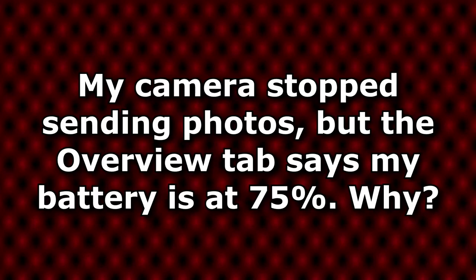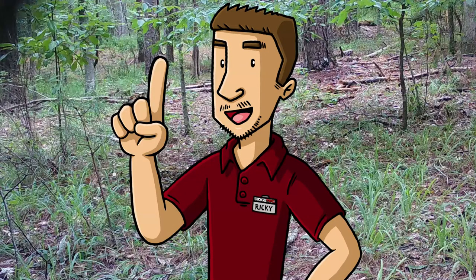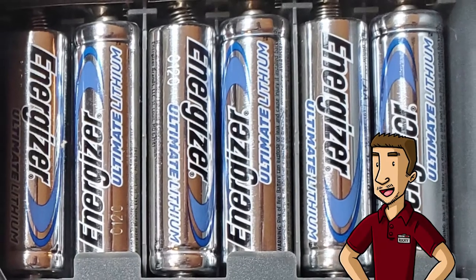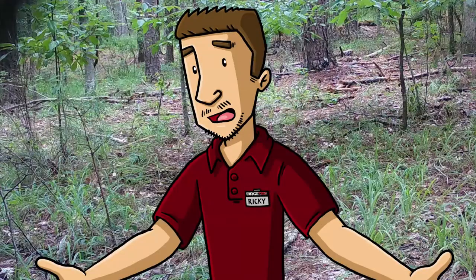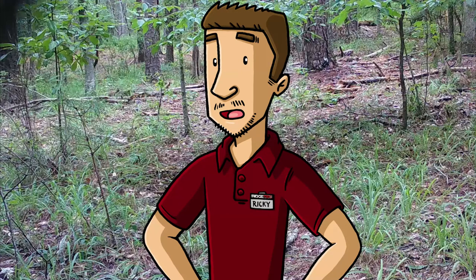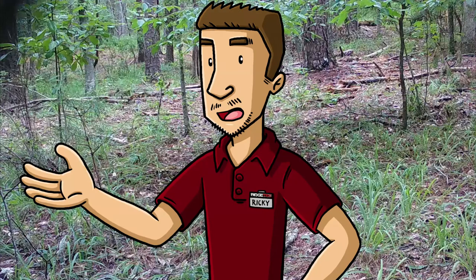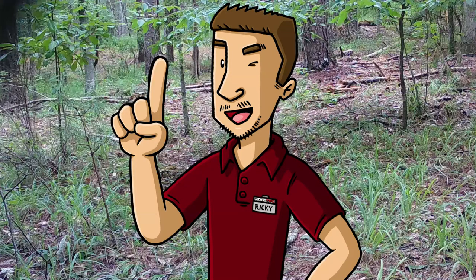My camera stopped sending photos, but the overview tab says my battery is at 75%. Why? If you're using lithium AA batteries, this may happen because lithiums hold their charge until their final moments. Your camera likely didn't have enough power left to communicate once more after sending that 75% battery status, so this would have been the final reading you received. You'll want to keep a close eye on your battery life while using lithium batteries and change them when your battery reading begins to drop. If you're concerned about any negative side effects of using AA batteries, we have external power options available in our online store.